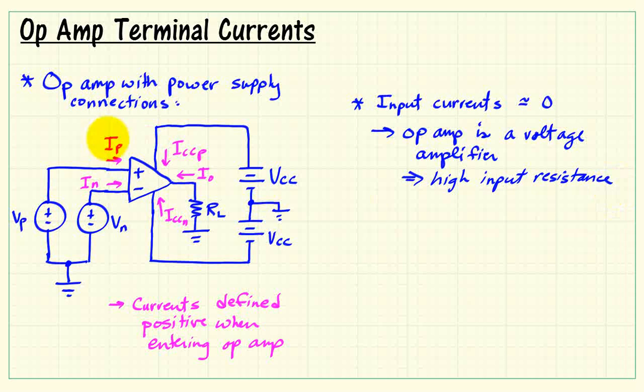Since the op amp is a voltage amplifier, it has a very high input resistance. So we can approximate the two input currents as zero.